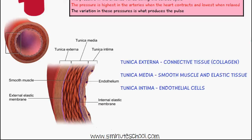The important thing to remember is that arteries have a very thick wall in comparison to other blood vessels like veins and capillaries. Because they carry blood at such high pressure, they must have a strong muscular wall to withstand this high pressure. The three main layers you need to know are: tunica externa, tunica media, and tunica intima.